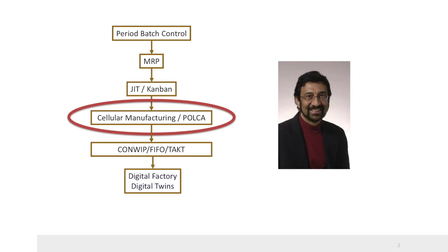The POLCA planning and control system assumes the presence of dependent cells that deliver items to other cells. Each manufacturing order requires processing within a number of cells.